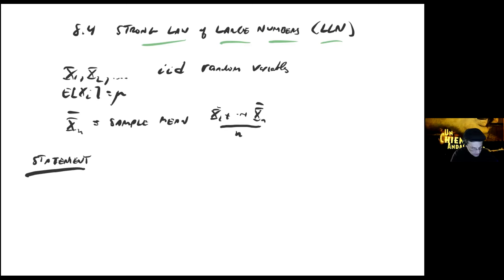So the statement of the LLN, I'm going to formulate it in a sort of informal way first. The informal version of the statement is that the sample mean tends to μ. μ is often called the population mean in statistics; it's the mean of the original distribution. X̄ₙ tends to μ with probability one. That's the slogan.